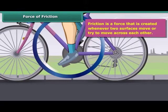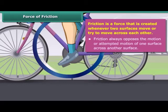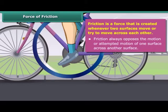Friction is a force that is created whenever two surfaces move or try to move across each other. Friction always opposes the motion or attempted motion of one surface across another surface. The force which resists the motion of a body while moving on a surface is called friction.